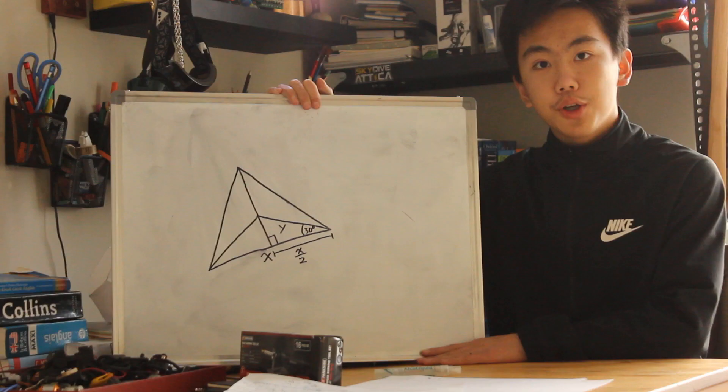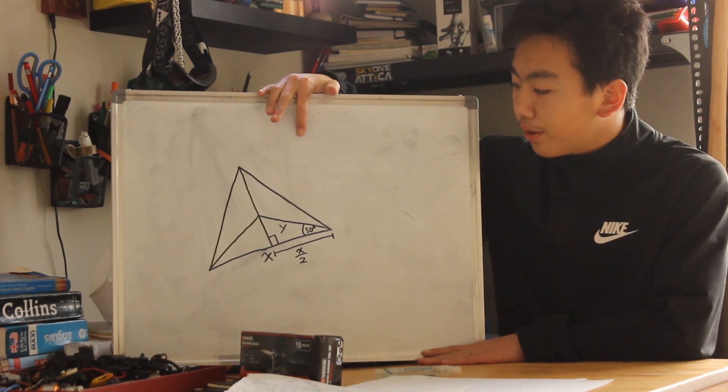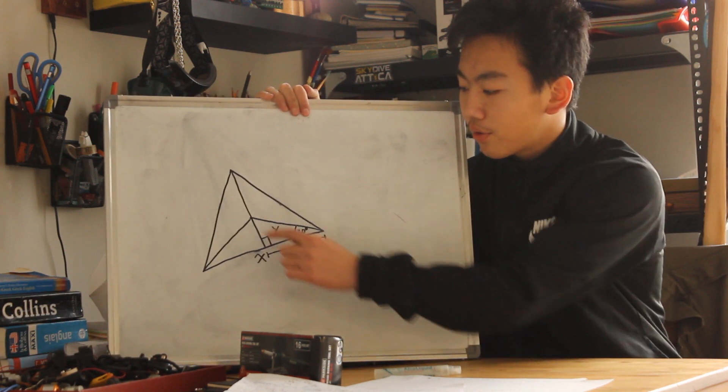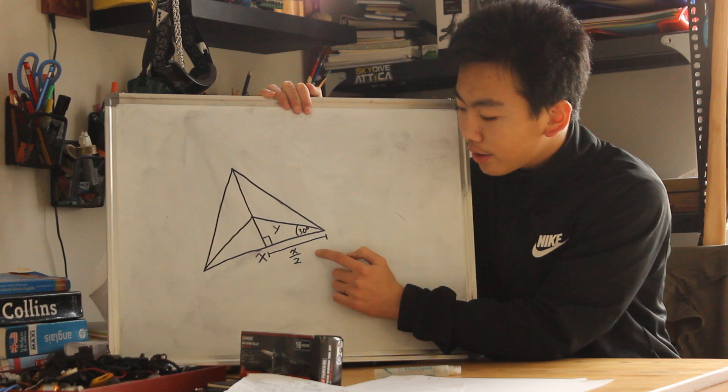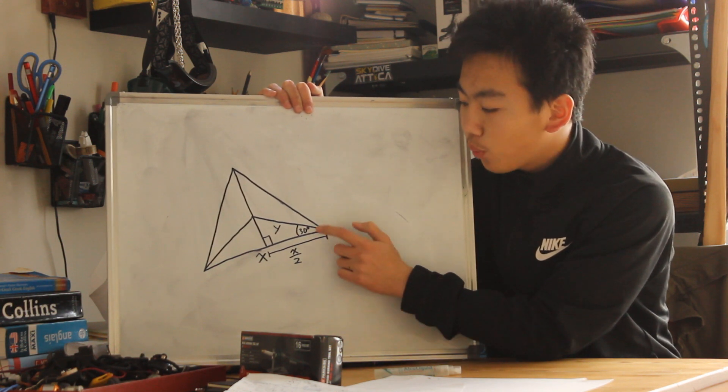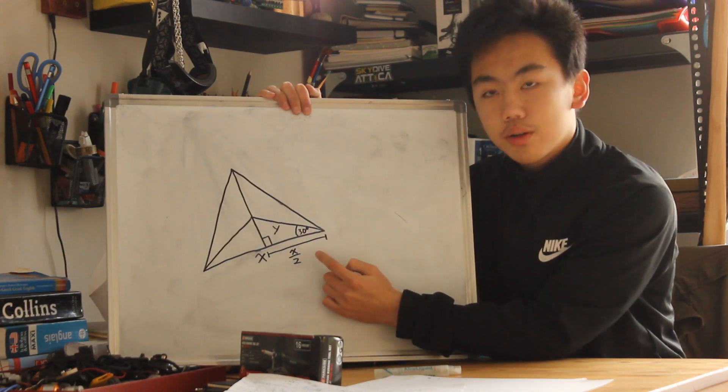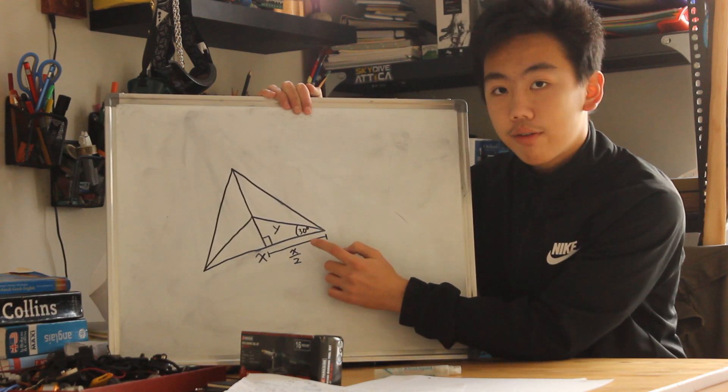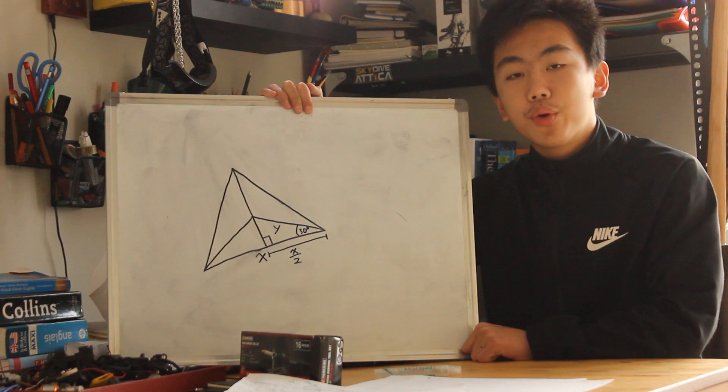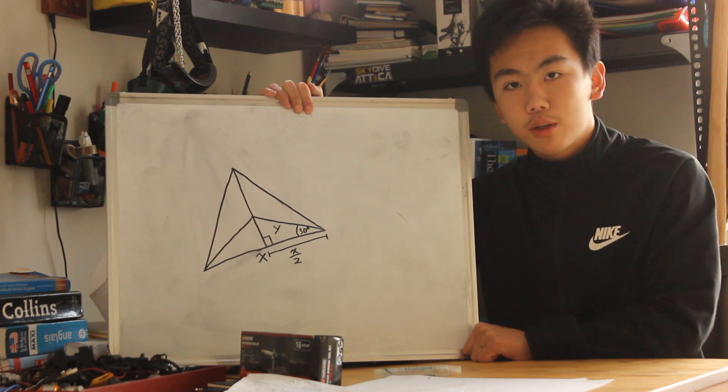For substitution of y, this is the base triangle. Y is the hypotenuse of a right angle triangle. One side of the right angle triangle is known, and one of the angles is known: 30 degrees. The entire angle of an equilateral triangle is 60, half of that is 30. So now we can use trigonometry to substitute y.